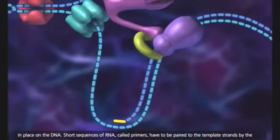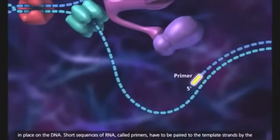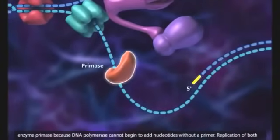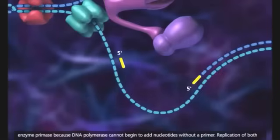Short sequences of RNA, called primers, have to be paired to the template strands by the enzyme primase, because DNA polymerase cannot begin to add nucleotides without a primer.